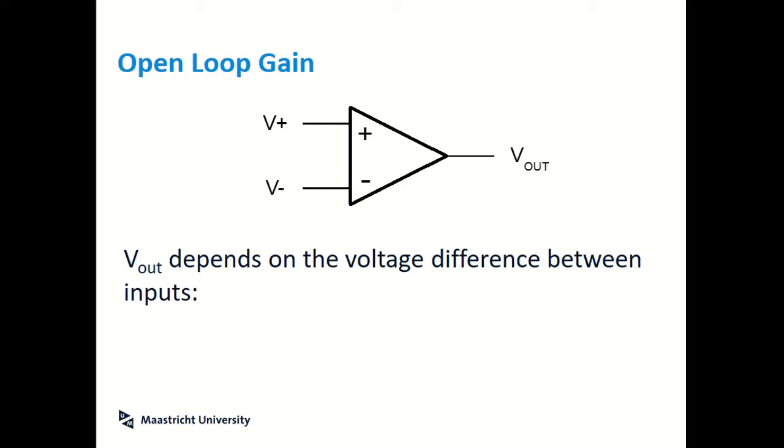In this configuration, which we call open-loop, the voltage out depends upon the difference between the two input signals. And you can see here that V_out is equal to A, which is known as the gain, and in this case the open-loop gain, multiplied by the difference between the two input terminals, the difference between the voltage there.